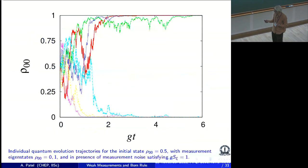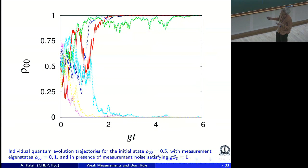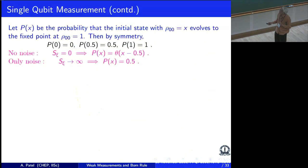Here are the pictures — numerical evolution explicitly carried out. It starts at 0.5, wanders around, and then gets stuck at one end or the other.